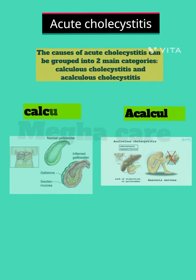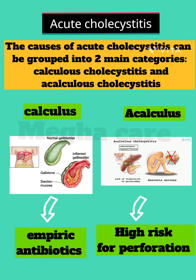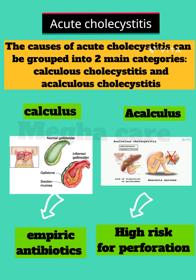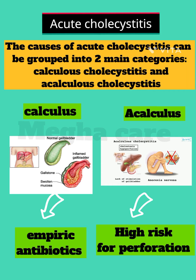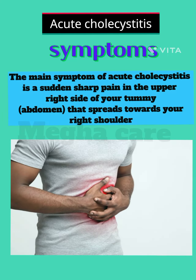The causes of acute cholecystitis can be grouped into two main categories: calculus cholecystitis and acalculus cholecystitis. The main symptom of acute cholecystitis is a sudden sharp pain in the upper right side of your abdomen that spreads towards your right shoulder.